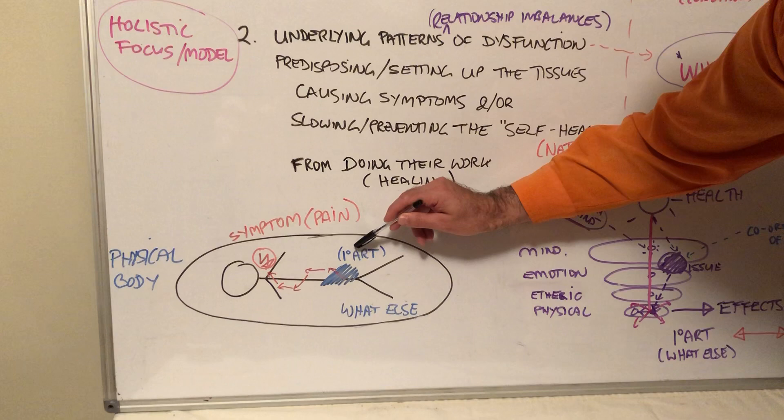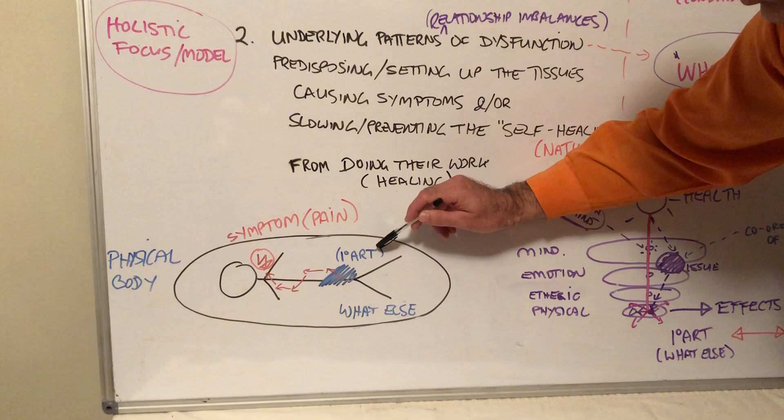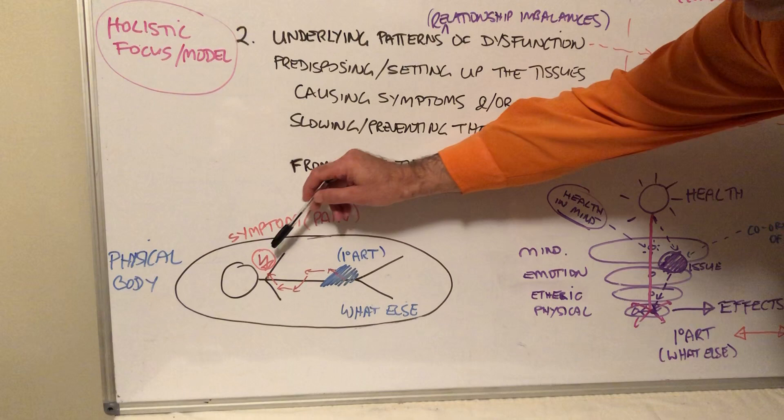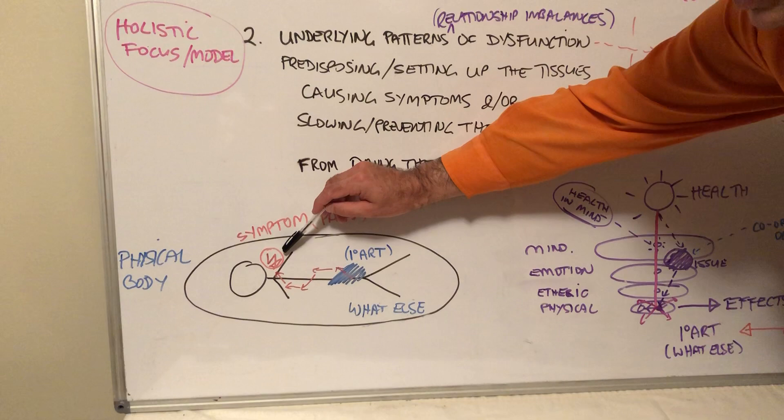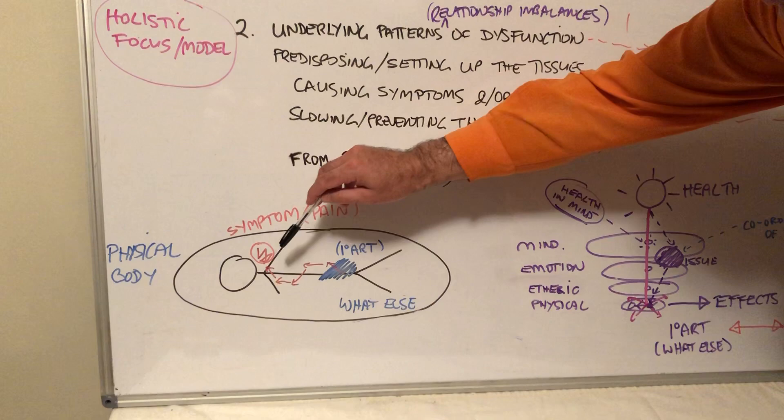That's manifested as what's called a primary ART: A is asymmetry, R is range and quality of motion abnormality, and T is tissue texture change. That tells you what's actually worth treating in the body—that it's a real problem, not a compensation. This effect could be a compensation and might be asymmetrical and painful and tender and have altered texture, but it might actually be functioning relatively okay but can't heal unless this is dealt with first.